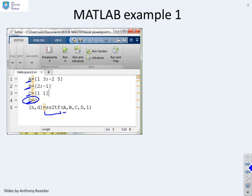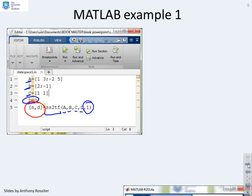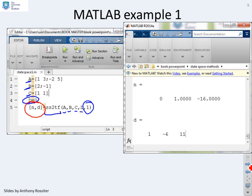So then you put in your A, B, C, D matrices, and this number here specifies which input you are interested in. Now this system only has one input so I've just put one. And the output you get from this is the numerator and denominator of the transfer function. So let's have a look at the result. There you go.